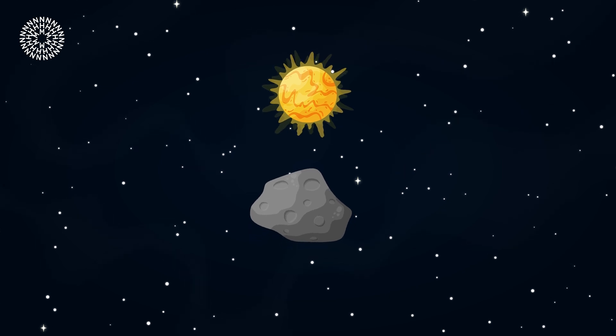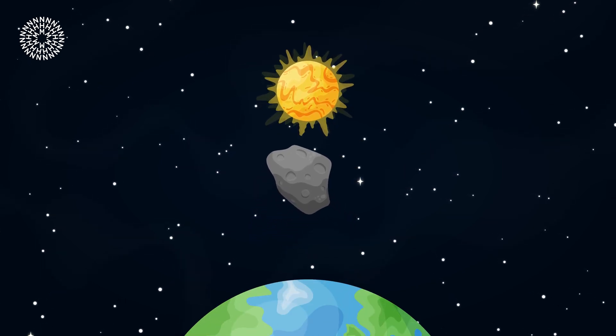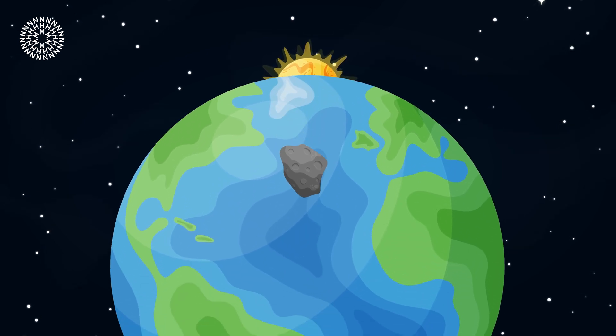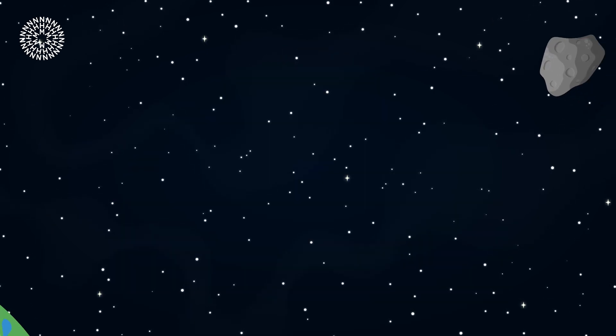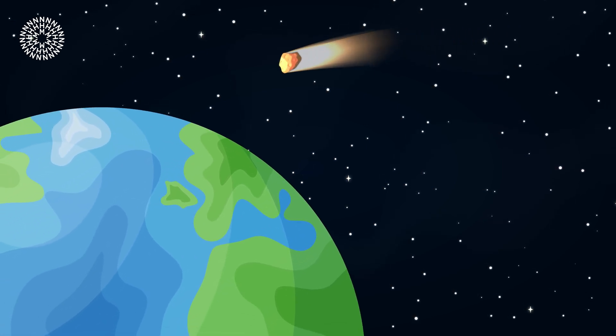It will travel through space, spiralling towards the sun. Sometimes, Earth gets in the way of a meteoroid's pass. And if this rock enters our atmosphere, its name changes again. We'd call this rock a meteor.